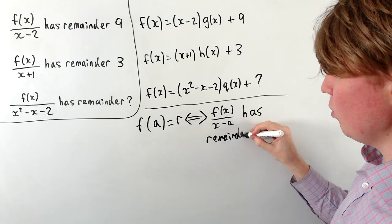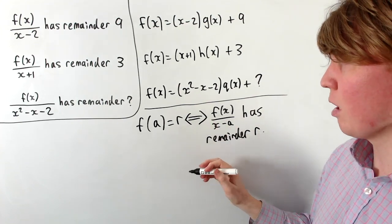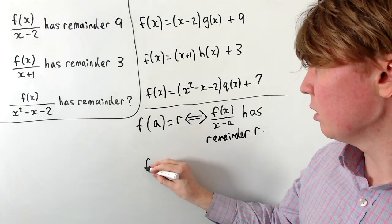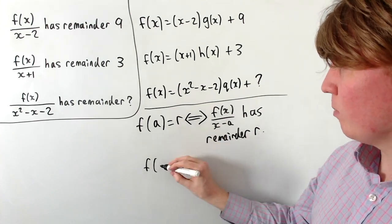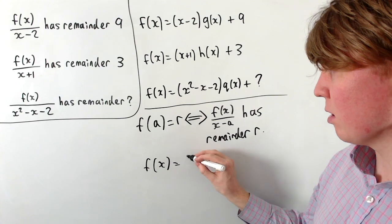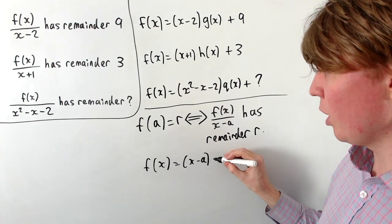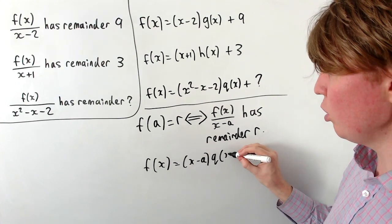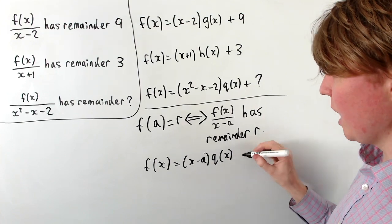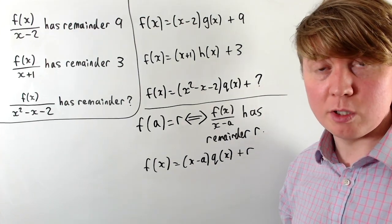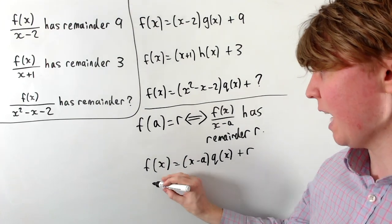We'll just see why this is true before we start using the remainder theorem. If you imagine we try and divide by x minus a, so we write f(x) as x minus a multiplied by some other polynomial we'll call q(x), and then we get some remainder r. Let's just see what happens if we substitute a into our function in place of x.